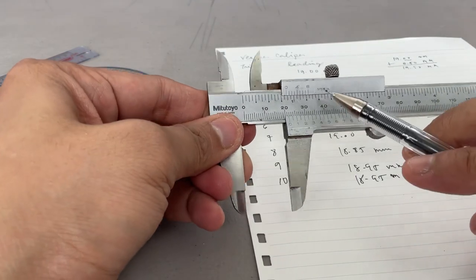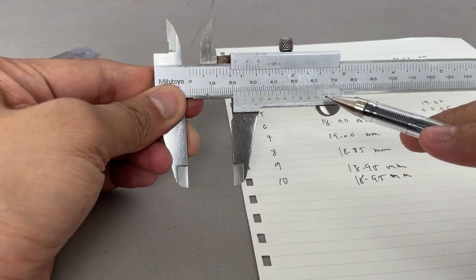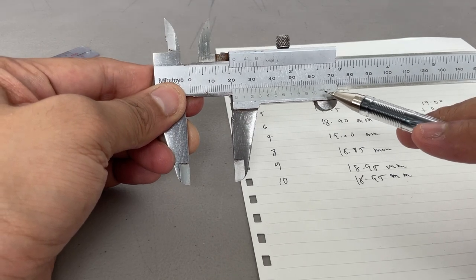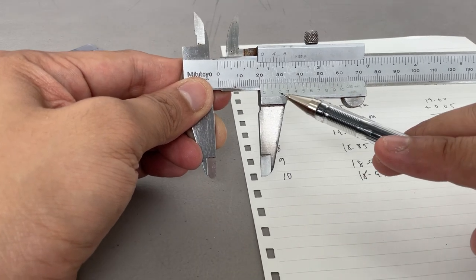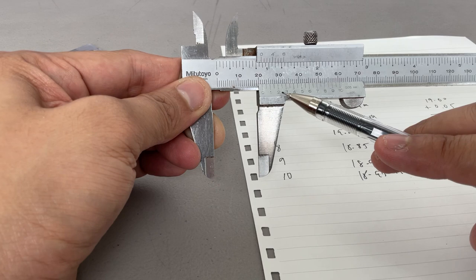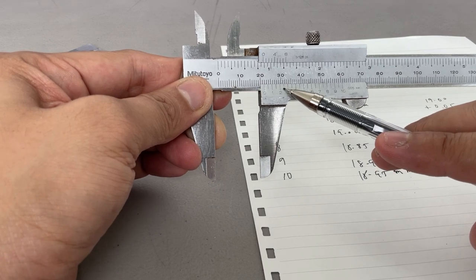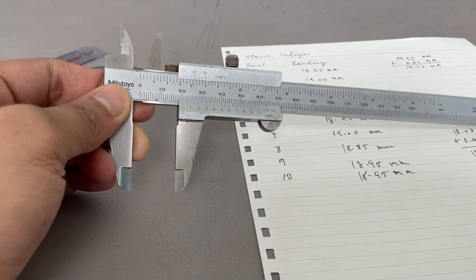So add the main scale and add the vernier scale. Considering the least count, ito yung kaya niyang i-measure, yung pinakamaliit na kaya niyang i-measure. So actually, every line represents 0.05, so this is 0.1 mm, 0.2, so this is 0.25 mm, and so on. So that's all for vernier caliper.